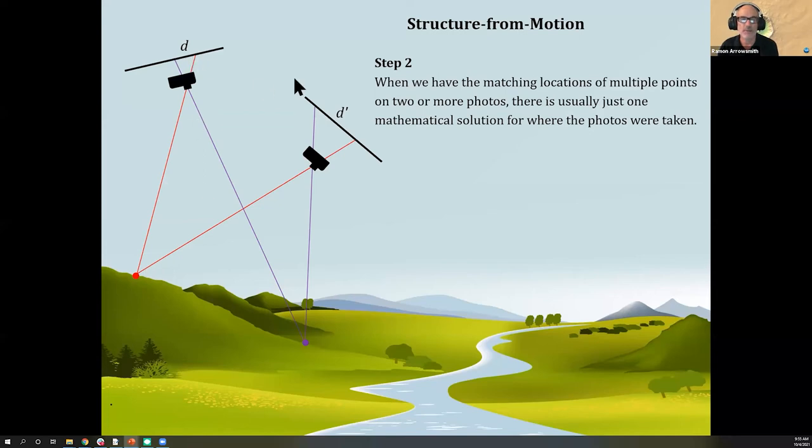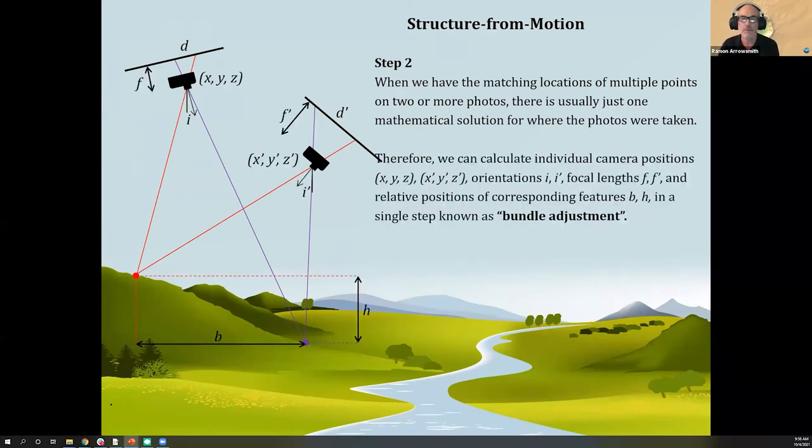Once we have those points, there's basically one mathematical solution that will explain where the points should end up on each picture. Then we can start to calculate the individual camera positions (X,Y,Z or X prime, Y prime, Z prime), the orientations (this i vector), focal lengths, and the relative correspondings of the B and H in a single step known as a bundle adjustment. We basically take all the pictures, all the Ds, D primes that come from our identified targets, and there's only one solution that will explain it all. The bundle adjustment distributes error amongst them and tries to find the best fit.